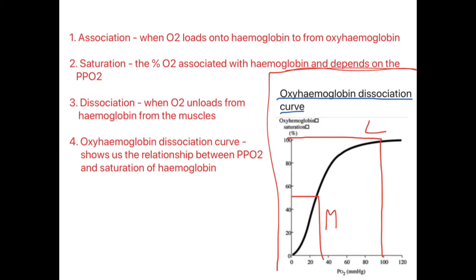Pause the video and get down these key terms before we look at the oxyhaemoglobin dissociation curve. This curve shows the relationship between the partial pressure of oxygen and the percentage saturation of haemoglobin. At the lungs, at 100 mmHg partial pressure of oxygen, haemoglobin is 100% saturated. Moving down to the muscles, saturation drops to about 50% because oxygen has dissociated down the concentration gradient into the body's cells.